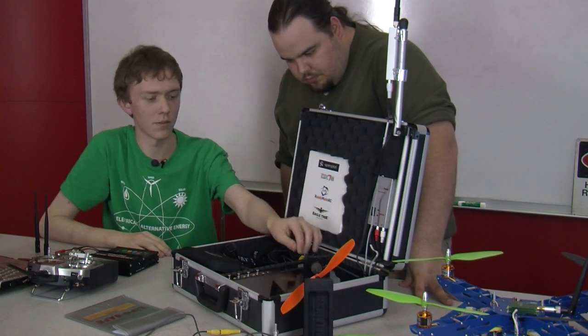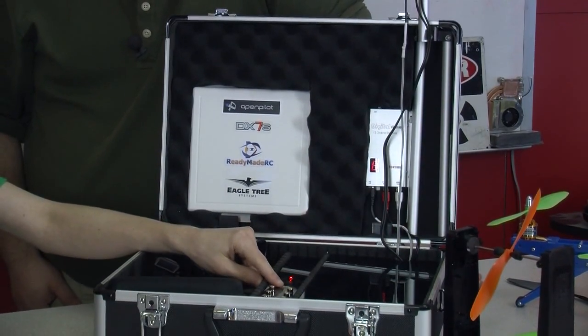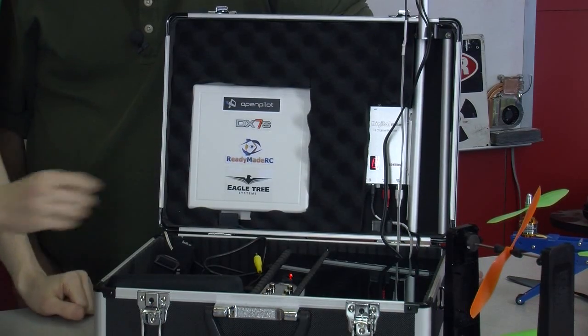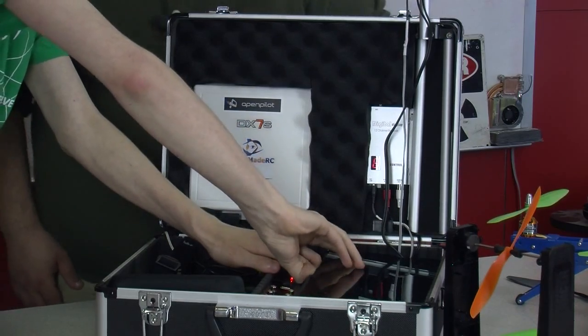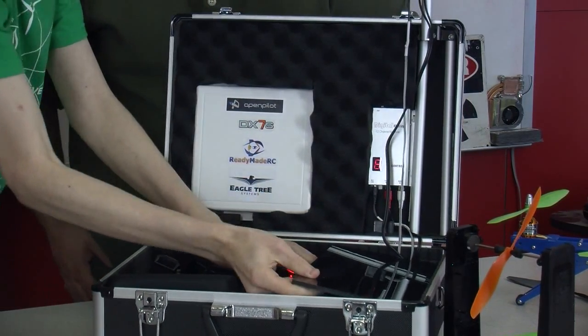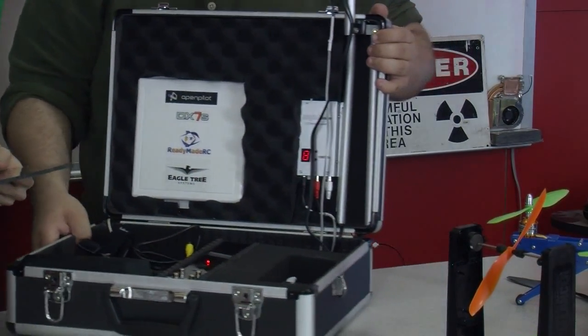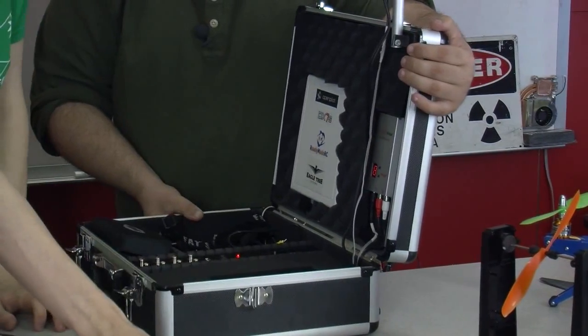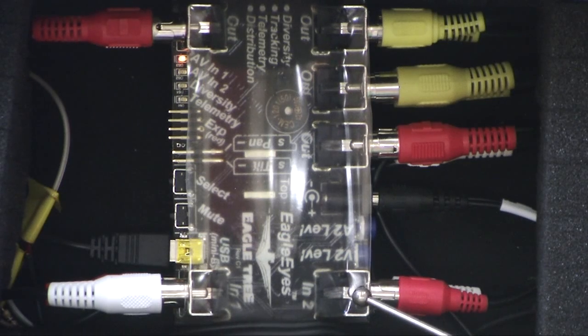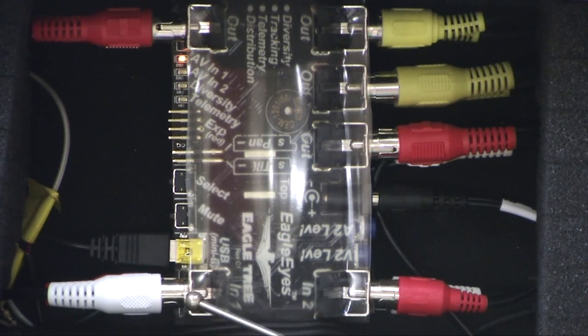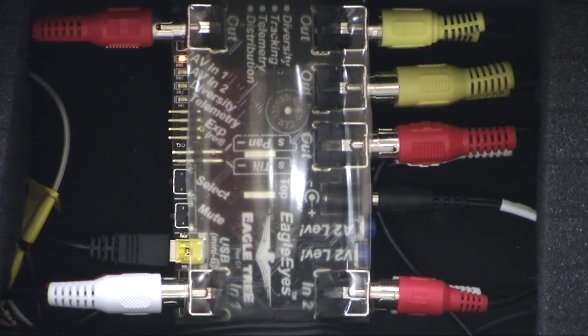And then down here is my standard on off. And then USB is for programming the video receiving. So here we have two video inputs, the whip antenna and the patch antenna. If either of these fail or just gets lost, it will automatically switch to the one with the best signal.